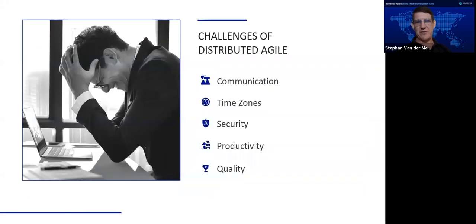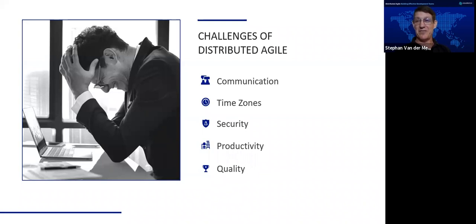There are many challenges to distributed Agile: communication over the distance, time zones causing less overlap between various teams, security problems as people sit at home. During COVID times, there were more hacks than ever before. Productivity and quality issues also come into it. Whereas distributed Agile is the go-to strategy now, there are challenges, and we need to find ways to work effectively around or through those challenges.